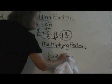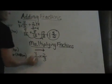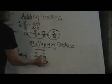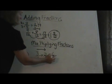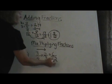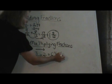Now let's look at multiplying. Multiplying is much easier than adding. We're just going to multiply the top and multiply the bottom straight across. So three times two is six. Four times three is twelve. And six-twelfths reduces by six divided by six and I get one-half.